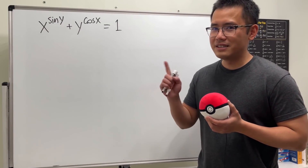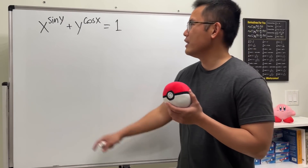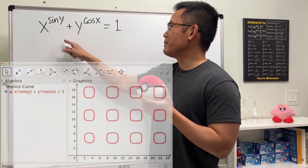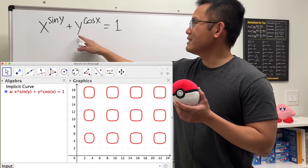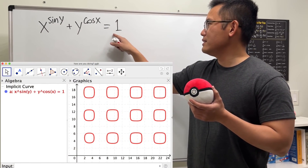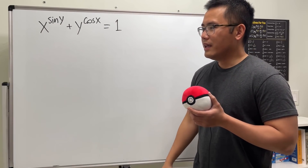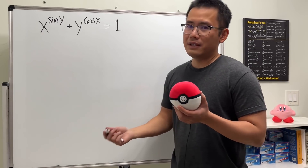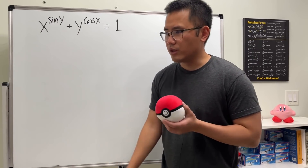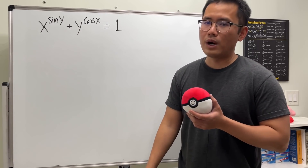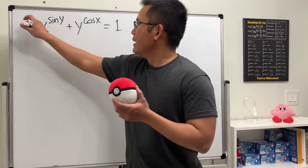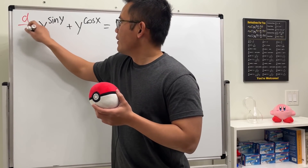This is the first one, and we have x to the sine y power plus y to the cosine x power is equal to 1. We want to find dy/dx — and of course you can also find dx/dy, but let's go ahead with dy/dx.